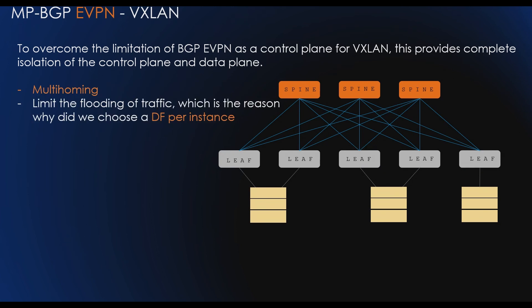The next benefit is multi-homing. We want two gateway devices at the edge of our data centers to support multi-homing scenarios. EVPN allows for all-active multi-homing scenarios. To limit flooding of traffic, a designated forwarder is selected per instance, responsible for receiving BUM traffic, while non-DF peers block it. Split horizon is also supported to prevent traffic originating from our own data center from looping back.